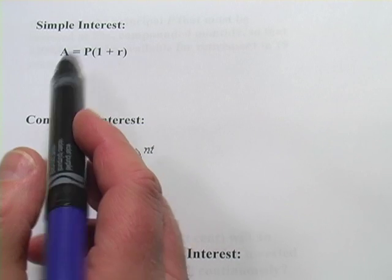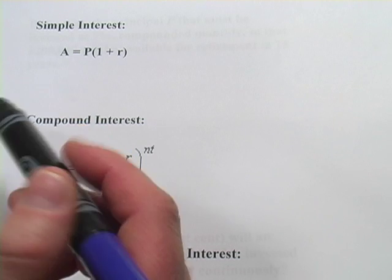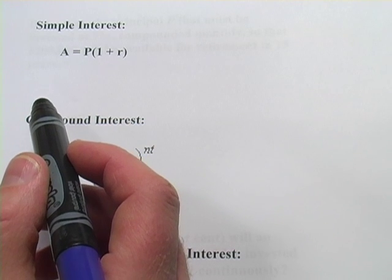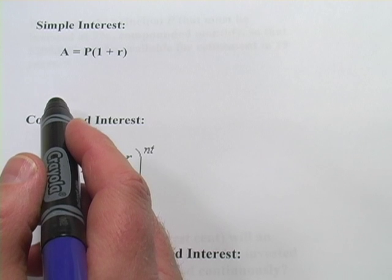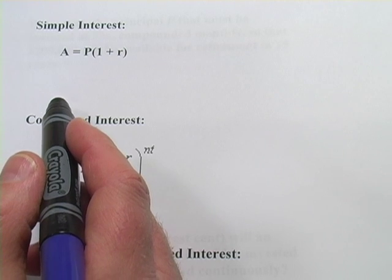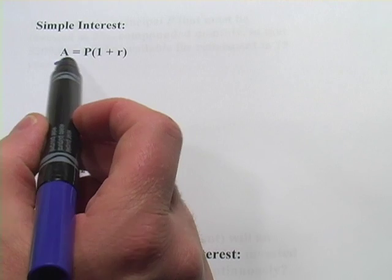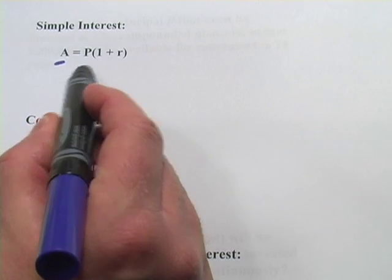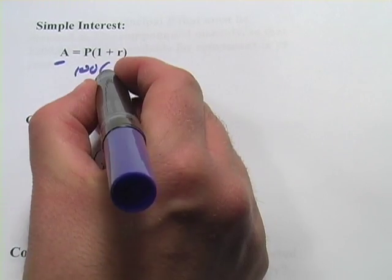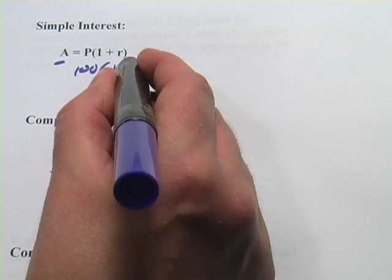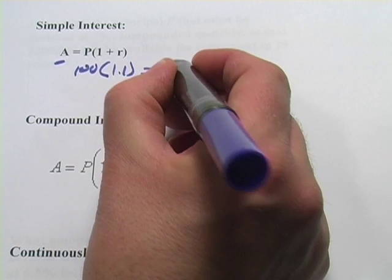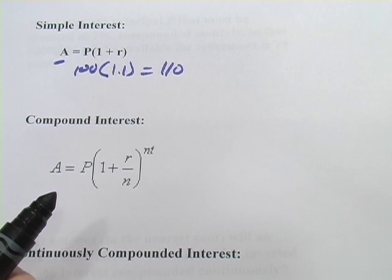So simple interest would be somebody says, I'll hold on to your $100 for you for 10 years, and I'll give you a 10% interest rate, which means after those 10 years, you get $110. So it would be the amount that you get at the end equals the principal, or in this case $100, times 1 plus the rate, and the rate is 10% or 0.1, and that would equal $110. That would be simple interest. It's not a good way to go if you want to make money.